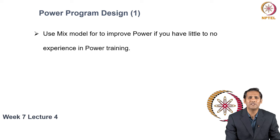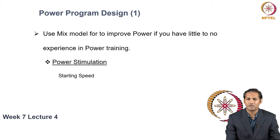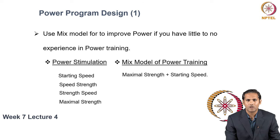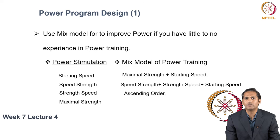As a general guideline, you should use the mixed model for improvement of power if you have little to no experience in power training. The mixed model means using starting speed, speed strength, strength speed, and maximal strength — the different types of stimulation to improve power output. A mixed model means you can use maximal strength or starting speed within a workout, or speed strength and strength speed together. You can also use an ascending order of exercise sequence, where the ascending order represents ascending force generation.